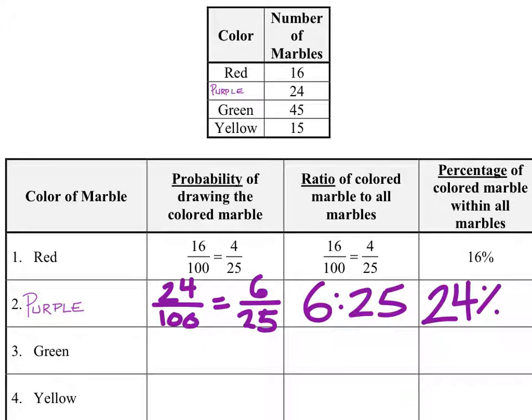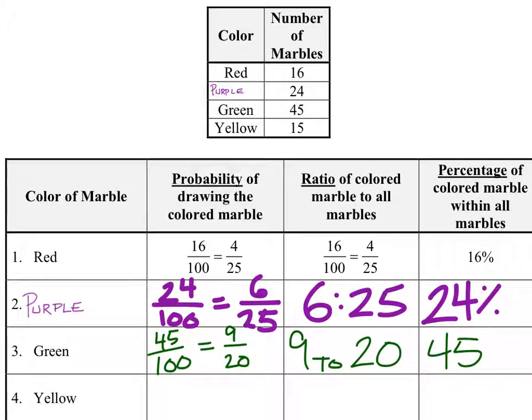There are 45 greens out of a hundred marbles, which also simplifies to 9 twentieths. 9 as a ratio we can also write it as 9 to 20, and as a percent, 45 percent.